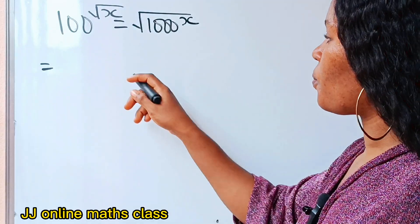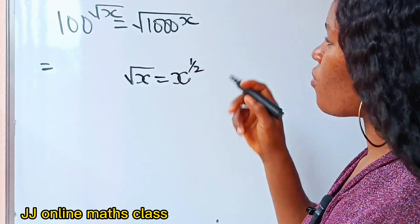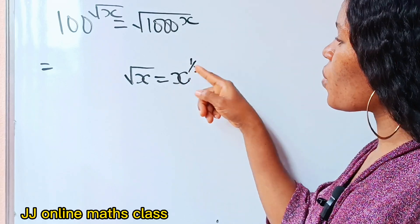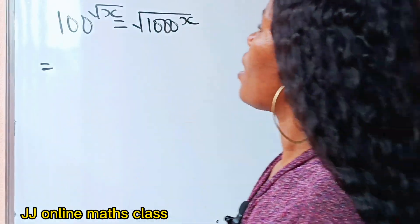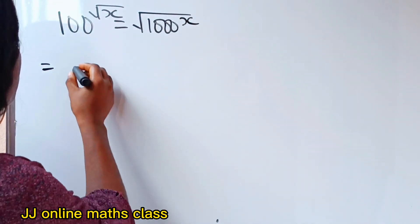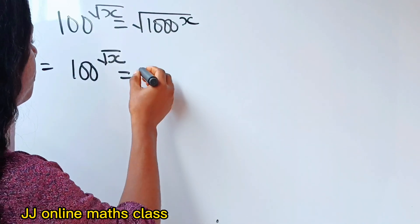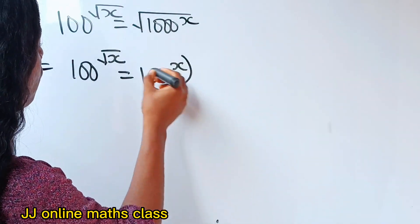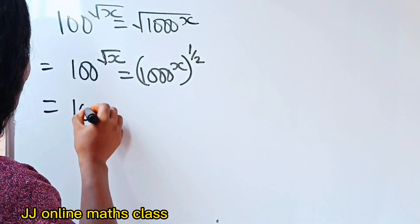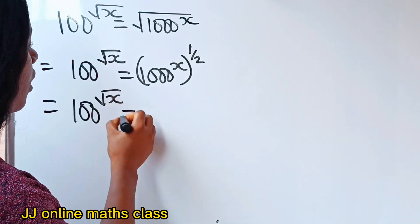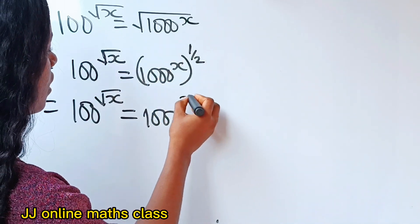First of all, root x is the same thing as x raised to the power of half. Root x — or root of anything — is the same as that number raised to the power of half. That means we can write 100 raised to the power of root x is equal to 1000 raised to the power of x raised to the power of half, which is the same as 1000 to the power of x over 2.